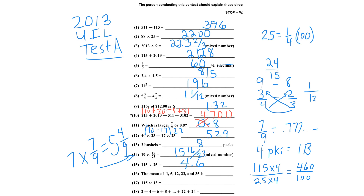Number 16: the mean is the same as the average. I add up 1, 5, 12, 22, and 35. 1 plus 5 is 6, plus 12 is 18, plus 22 is 40, plus 35 is 75. Then 75 divided by 5 is 15.